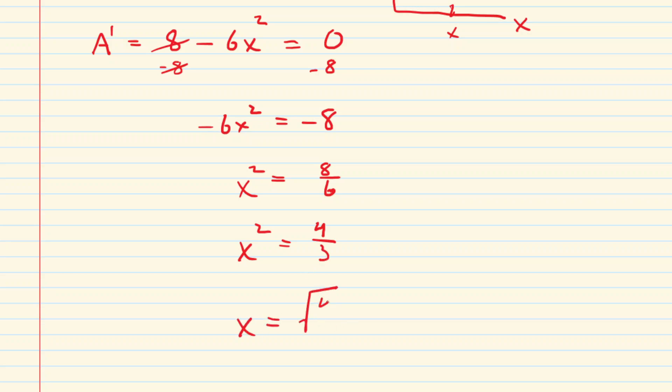And now we can take the square root. We get the square root of 4 thirds. This can be simplified as the square root of 4 over the square root of 3. But of course, the square root of 4 is 2. So we have 2 over the square root of 3. This is our x value.